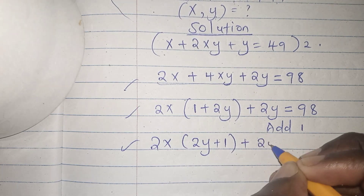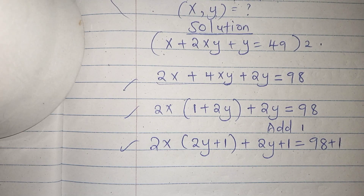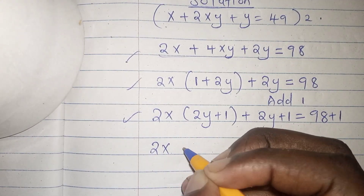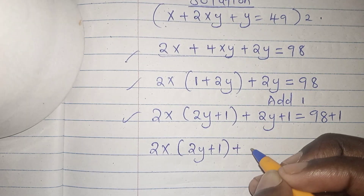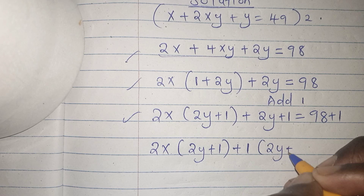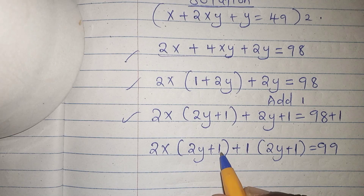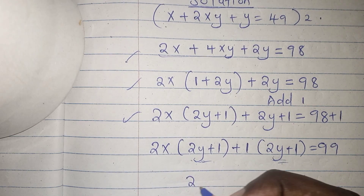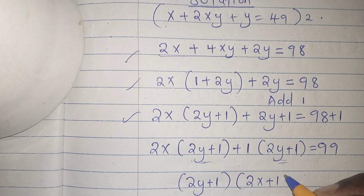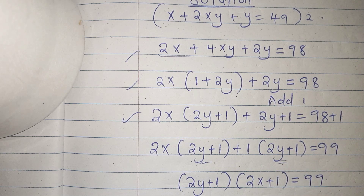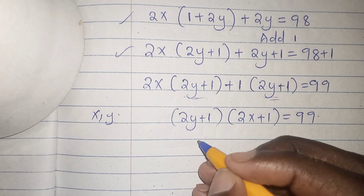We factor out (2y plus 1), which is the common factor, giving us (2y plus 1)(2x plus 1) equals 99. Since x and y are positive integers, y is greater than or equal to 3 and x is greater than or equal to 3.